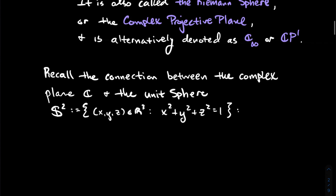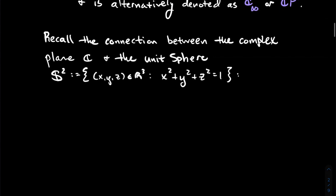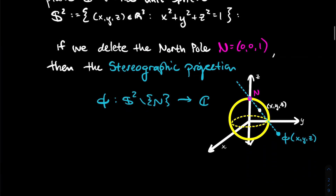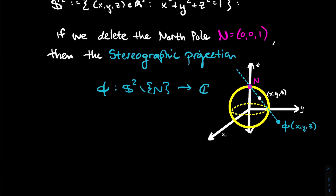Recall the connection between the complex numbers and the unit sphere in ℝ³, which is all the points (x, y, z) whose sum of squares of coordinates equals one. If you delete the north pole — the point (0, 0, 1) — there's a correspondence between all points on the sphere besides the north pole and the complex plane. This is called the stereographic projection, and I can get a function φ, the stereographic projection.